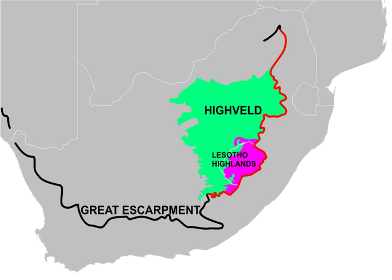Like so many areas of grassland all over the world, the Highveld is excellent agricultural land and most of the area has been converted for farming. The grassland areas now remaining in their natural state are in various nature reserves which, although a small portion of the Highveld, are still the largest areas of remaining grassland in South Africa. The protected areas include Suikerbosrand Nature Reserve, Verloren Valei Nature Reserve, Nooitgedacht Dam Nature Reserve, Bronkhorstspruit Dam Nature Reserve, Vaal Dam Nature Reserve, Koppes Dam Nature Reserve, and Willem Pretorius Game Reserve.